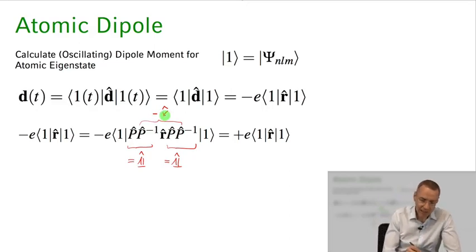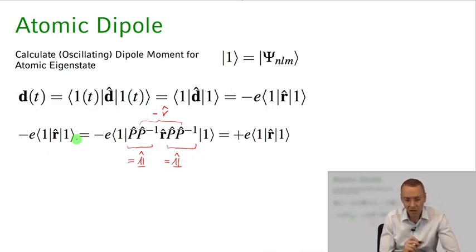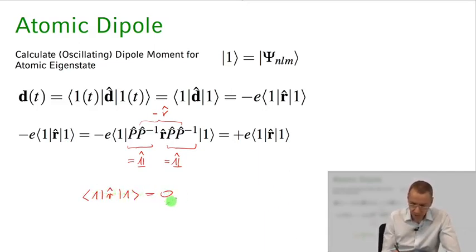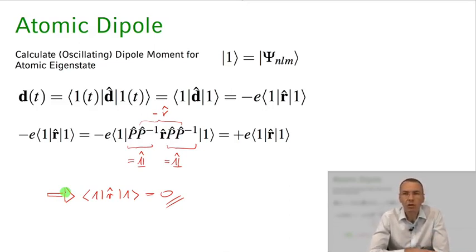So what we actually find is that the expectation value of the position operator when you're in an atomic eigenstate, which has a definite parity, is going to be the same as minus the same expectation value. Now how can that be? How can a value be the same as its negative? Well, that can only be the case if the expectation value of the position operator of our electron is zero. That's the only way we can fulfill this equation, with no other choice than having this matrix element vanish between atomic eigenstates.